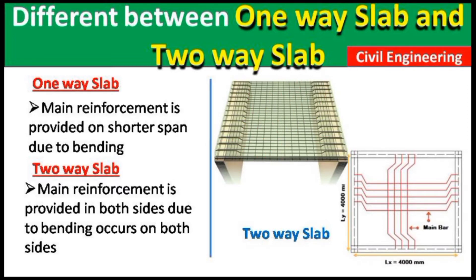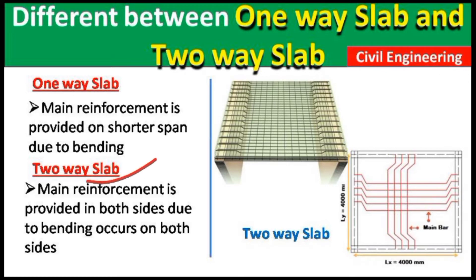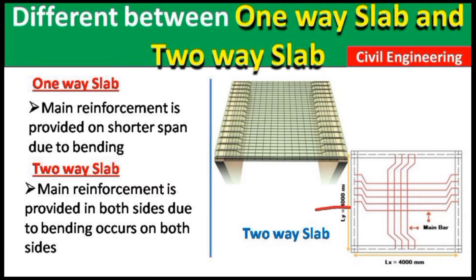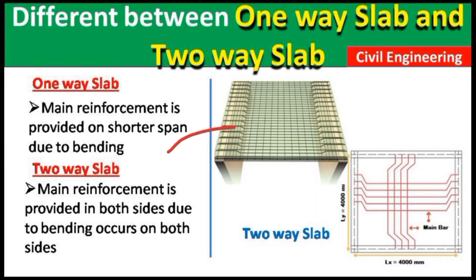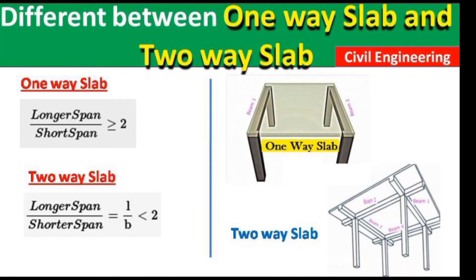In a one-way slab, the main steel bars are cranked. In a two-way slab, the main reinforcement is provided in both directions because bending occurs on both sides. You can see the main rods are placed in this direction and also in this direction. So in a two-way slab, main steel is in both directions, while in a one-way slab, main steel is only in one direction.